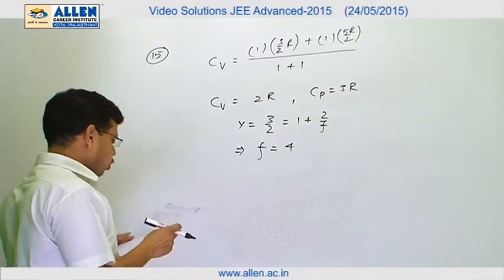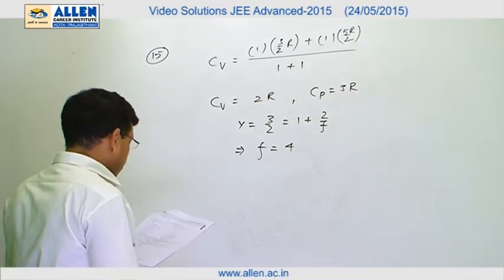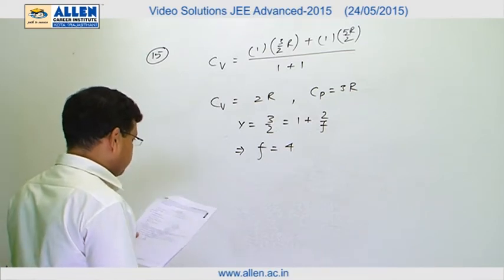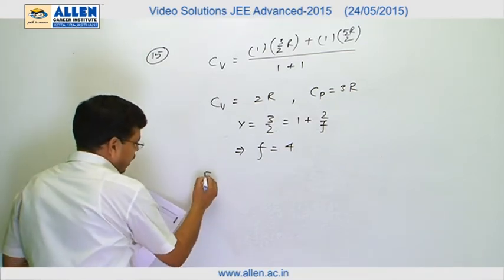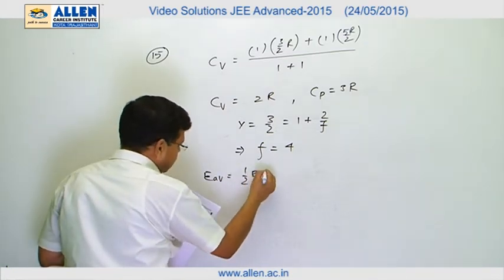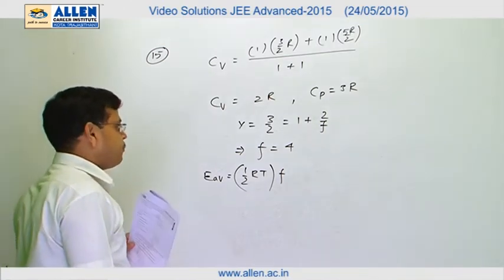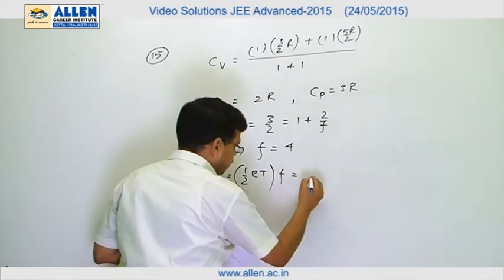Now we have to answer the following options. The average energy per mole of the gas mixture is: average energy is equal to half RT into degree of freedom per mole, so this turns out to be 2RT.